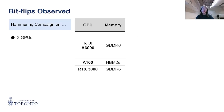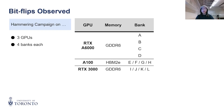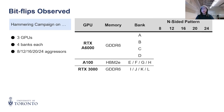We also tested an A100 with HBM2E and an RTX 3080 also with GDDR6. We hammered four banks on each GPU with eight to 24 aggressors and both checkered data patterns. This took us about 30 hours per bank per GPU.